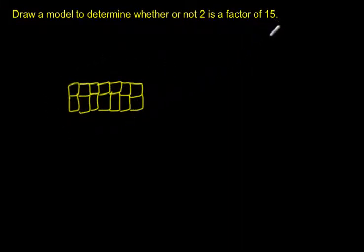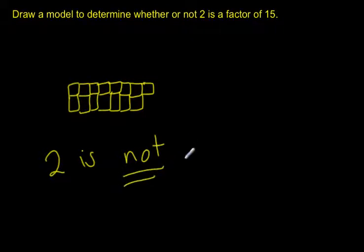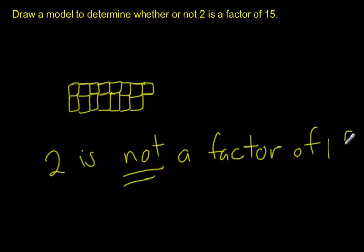Now I only have one more tile to use, and I run into a problem. I've already used 14 tiles and I've got this nice array, but I have to use one more tile. Whether I put it here or here, it's no longer going to be a rectangular array. Because I cannot make an array using 15 tiles in 2 rows, 2 is not a factor of 15. If I was able to make the array, I would say 2 was a factor. 2 would be a factor of 16, but not of 15, because I could not make an array.